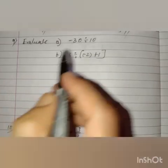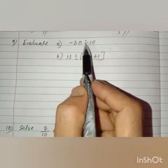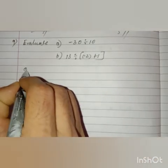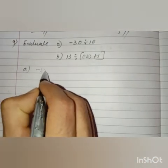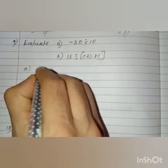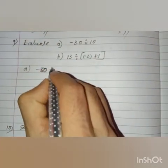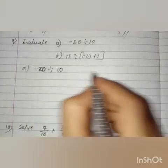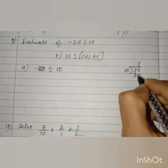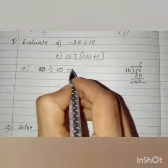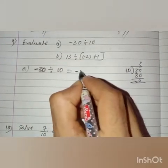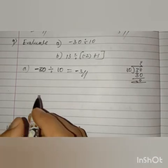Got it, children? Next, question number 9 — evaluate. Question (a): minus 30 divided by minus 10. Let us divide 30 by 10: 10 times 3 is 30. Since the dividend is negative and divisor is also negative, the answer is positive 3.